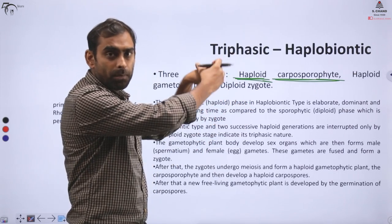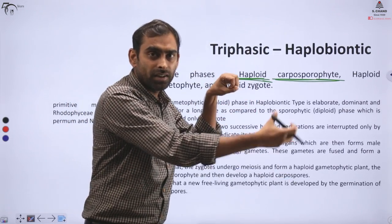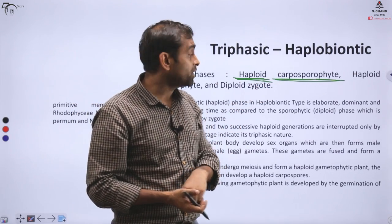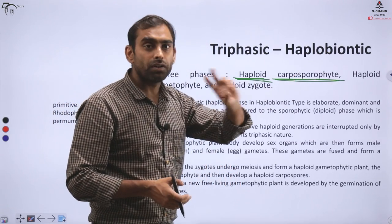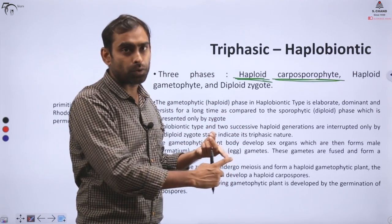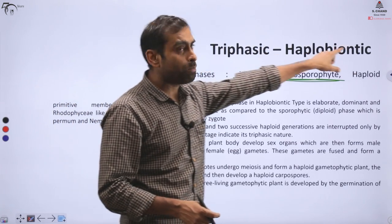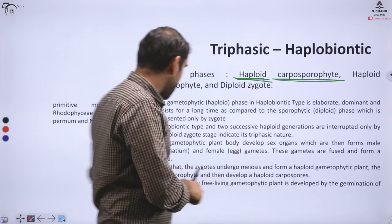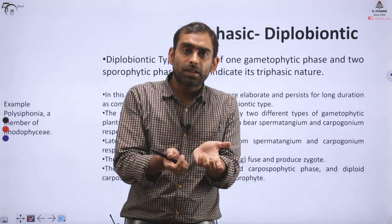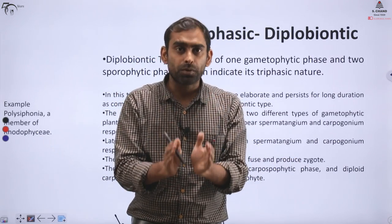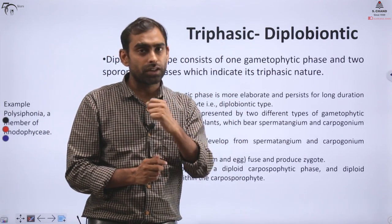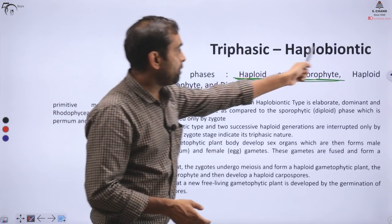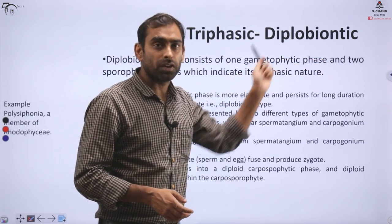Triphasic can be either haplobiontic. Haplobiontic means that haploid has two types of life forms - haploid is not single, haploid has two types of organisms, as you're seeing here. An intermediate example comes, called carposporophyte. We just talked about either sporophyte or gametophyte, but between sporophyte and gametophyte comes another stage, carposporophyte. So if an organism starts with haploid gametophyte, makes gametes, those gametes fuse to make zygote, and before turning into sporophyte, they make an intermediate sporophyte with independent existence, that's considered carposporophyte.